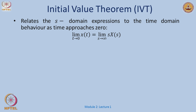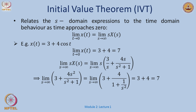Some other important properties: the initial value theorem states that lim(t→0) x(t) = lim(S→∞) S·X(S). For example, if x(t) = 3 + 4cos(t), then lim(t→0) x(t) = 3 + 4·1 = 7. In the S-domain, using L{3} = 3/S and L{cos(t)} = S/(S²+1), taking the limit S→∞ of S·X(S) also gives 7.